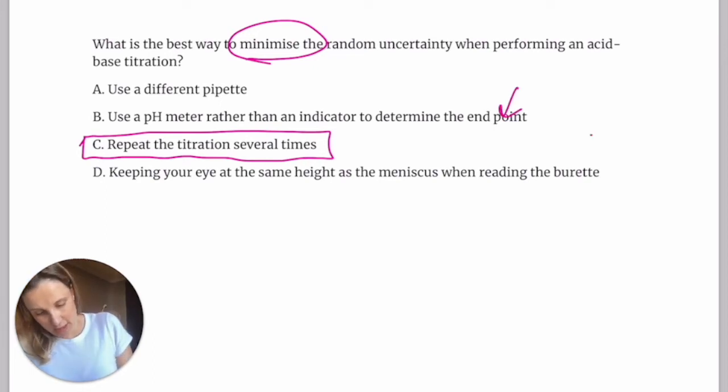These two are definitely systematic errors. They always shift the error in the same direction every single time. This one doesn't talk about what type of pipette. You're just suggesting getting another one of the same thing. So it's a bit too vague to pick out as your answer.